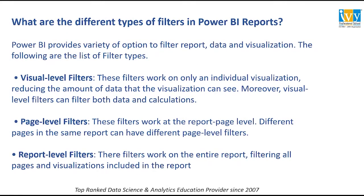What are the different types of filters in Power BI? Power BI provides a variety of options to filter report data and visualizations. The three important filters are: Visual Level Filters, which work on individual visualizations, reducing the data a visualization can see and filtering both data and calculations; Page Level Filters, which work at the report page level — different pages in the same report can have different page level filters; and Report Level Filters, which work on the entire report, filtering all pages and visualizations included. You can see these three filters on the right-hand side when you open any report page in Power BI.